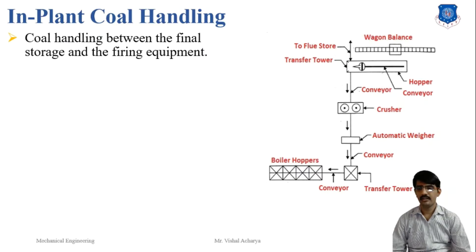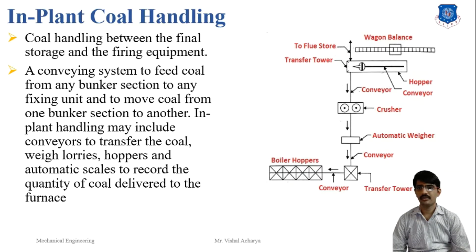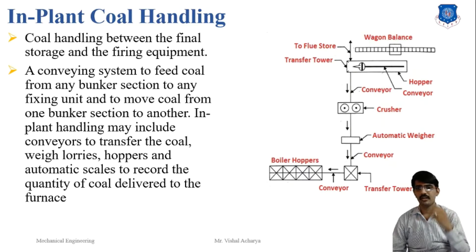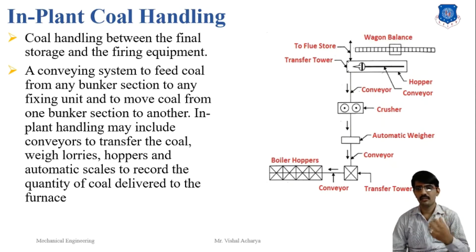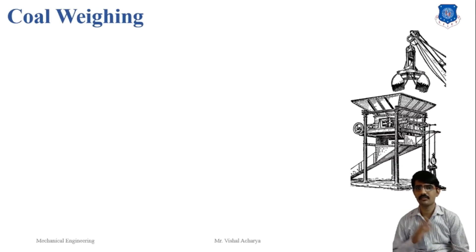Coal handling between the final storage to the firing equipment is called the in-plant coal handling system. A conveying system feeds coal from any bunker section to any firing unit and moves coal from one bunker section to another. In-plant handling may include conveyors to transfer the coal, wedge, flurries, hopper, and automatic scales to record the quantity of coal delivered to the furnace.